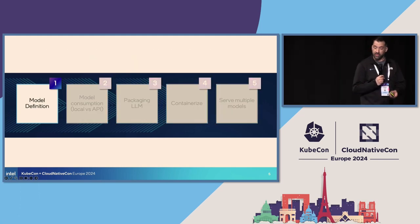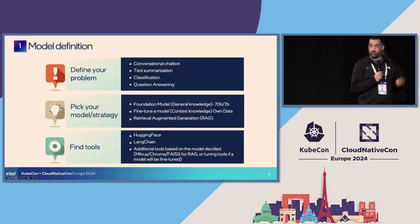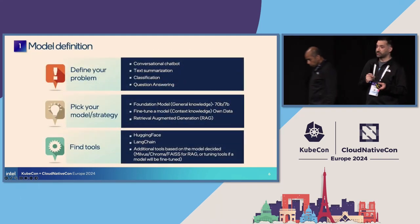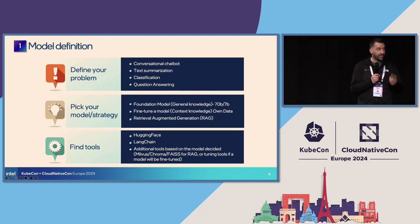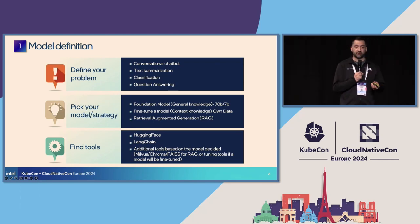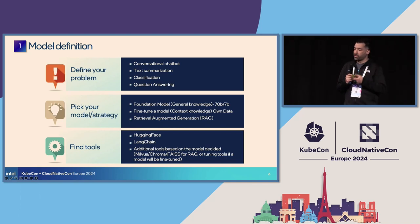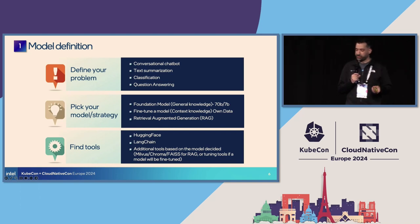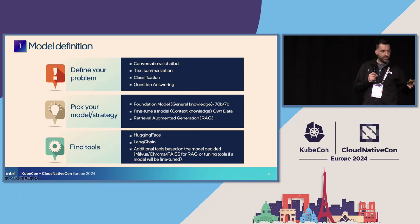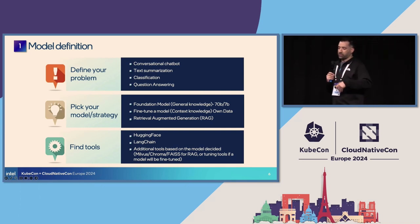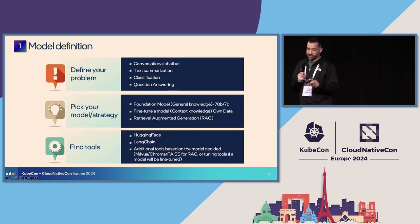The model definition is probably the most challenging part, because we need to know what our problem is. We need to pick which model to use and what the use case is — do we want to build a conversational chatbot, text humanization? LLMs can be used for multiple things: classification, question and answer, and more. The first thing to define is the problem.